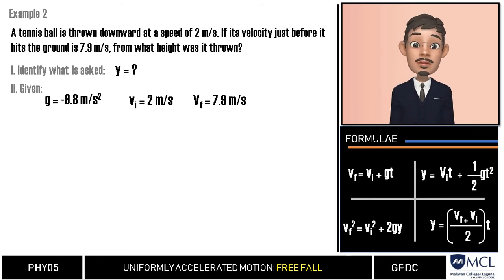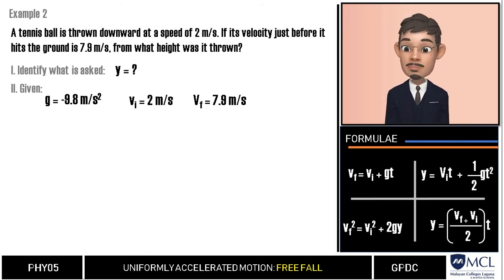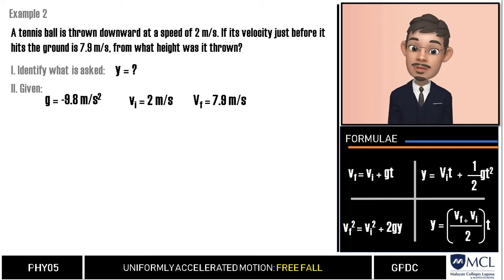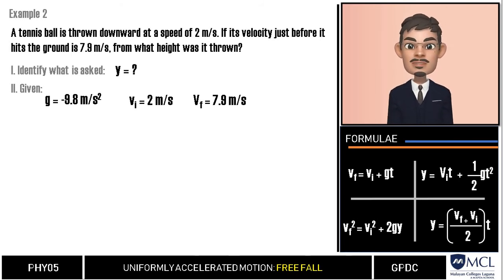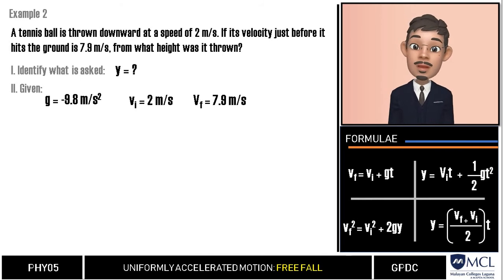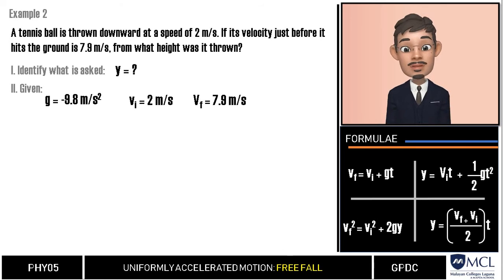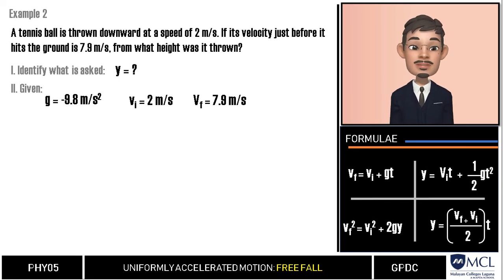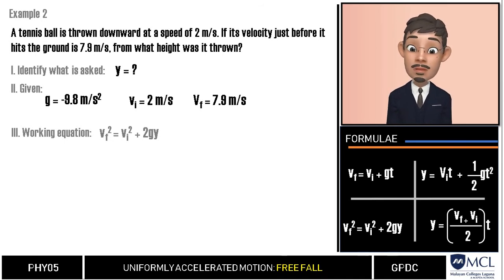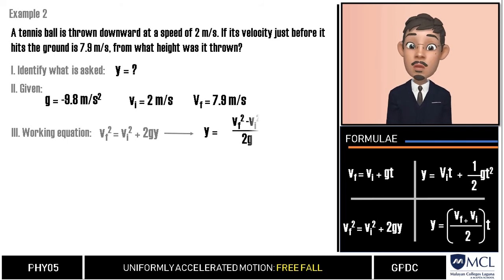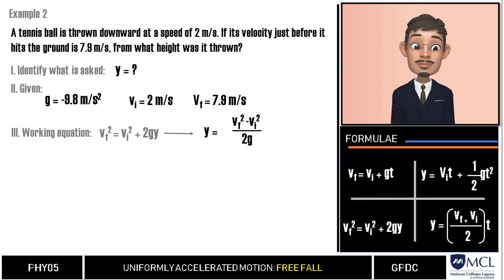In this problem, we are looking for displacement y. The initial and final velocities as well as acceleration due to gravity are all given. The initial and final velocities are both negative since they are directed downward. The correct formula is vf squared equals vi squared plus 2gy, which we can rearrange to y equals vf squared minus vi squared, all over 2g.